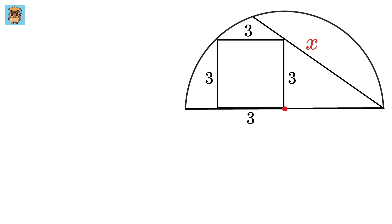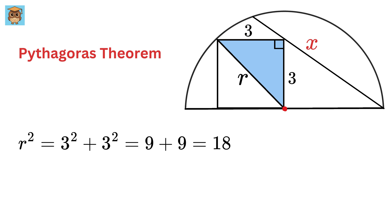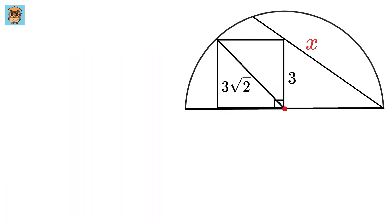Next we will construct the radius of this semicircle and label it as r. As this is a square so this will be a right angle and hence this will be a right triangle. So we will use Pythagoras theorem to find the radius. We get r square equals three square plus three square or nine plus nine or 18. So r equals root 18 or 3 root 2.